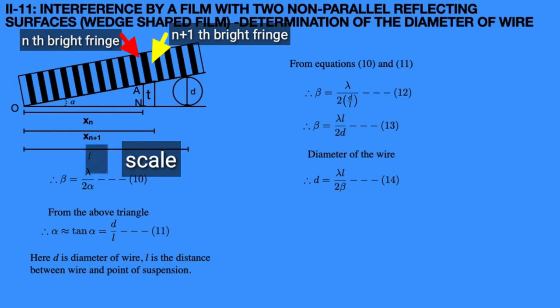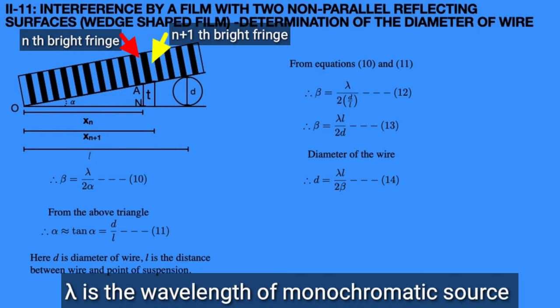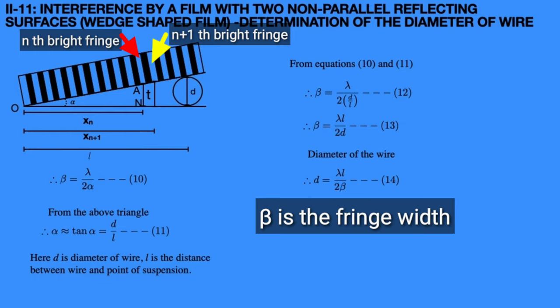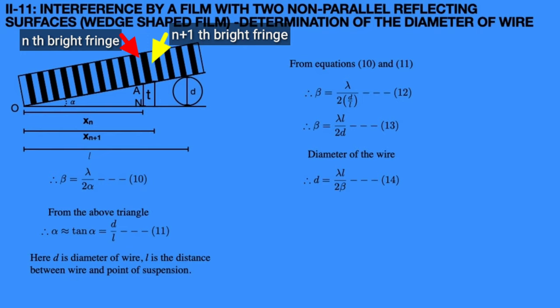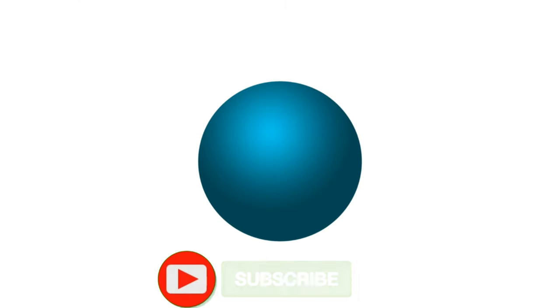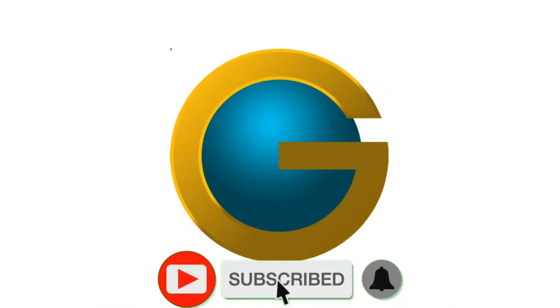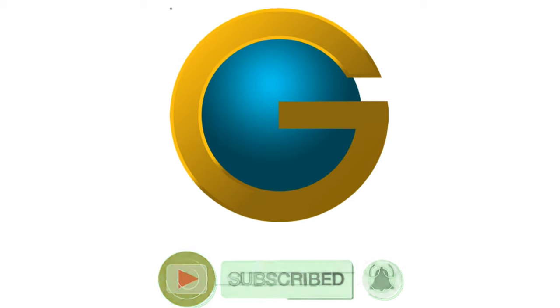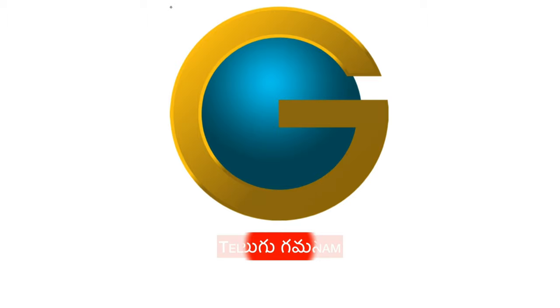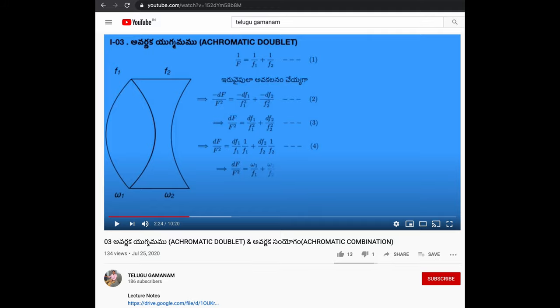Lambda is the wavelength of the monochromatic source, and beta is the fringe width, which can be evaluated from microscope readings. Finally, we get the diameter of the wire in the order of micrometers using the formula: d = λL / (2β). Please subscribe to our Telugu Gamanum channel for more lecture videos and click the bell icon for notifications. If you want lecture notes for this video, click the description link below. Thank you for watching — see you again in the next lecture video. Have a nice day.